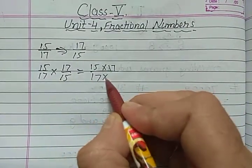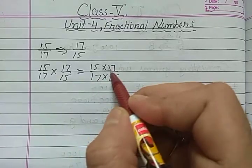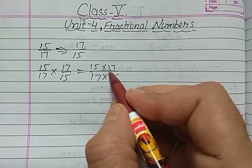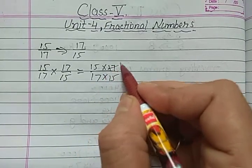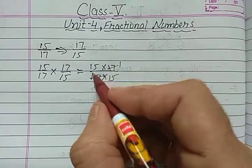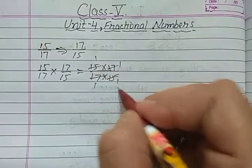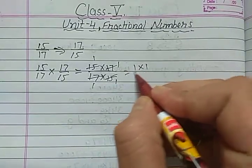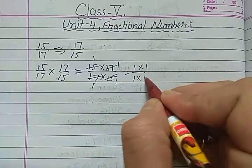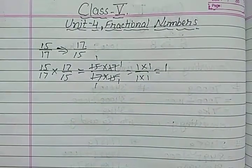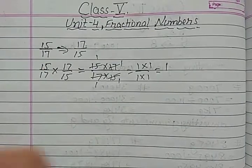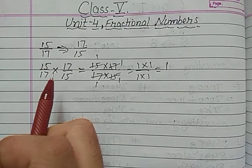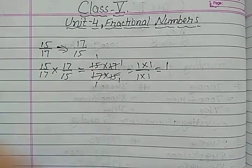17 multiplied by 15 and 15 multiplied by 17 — both 17s cancel and both 15s cancel, giving 1 multiplied by 1, which equals 1. So whenever we multiply the reciprocals, the product is 1.